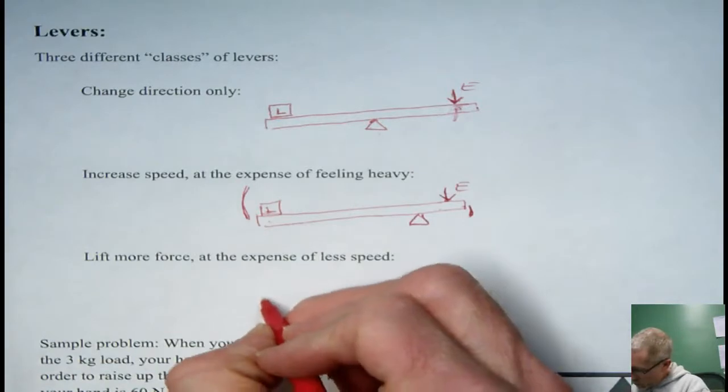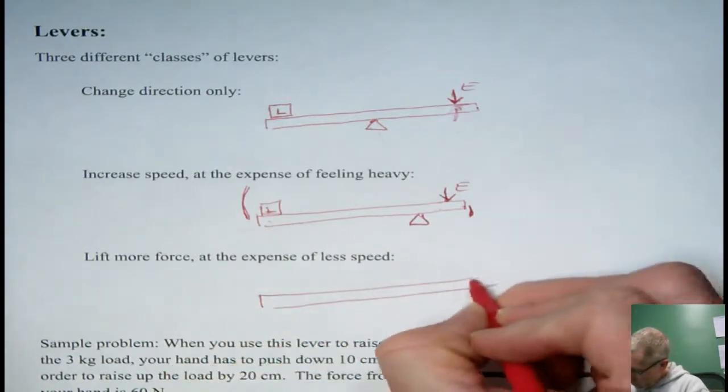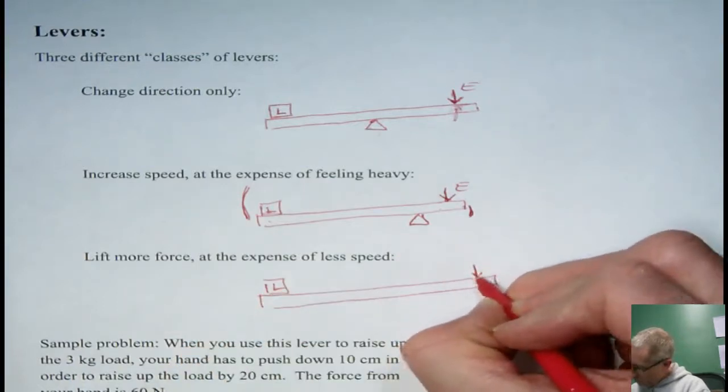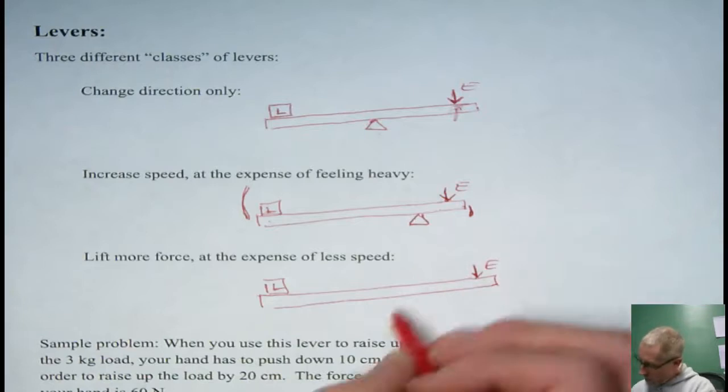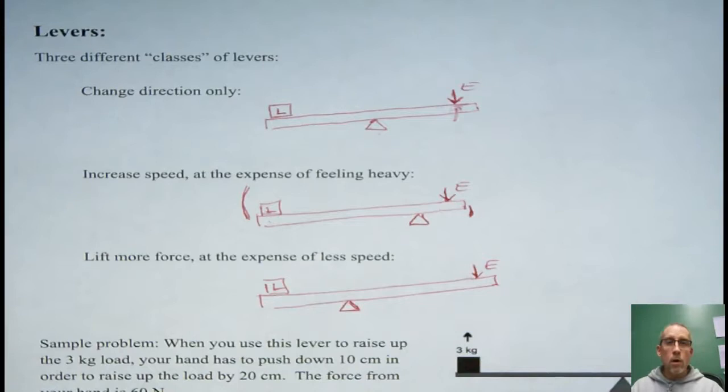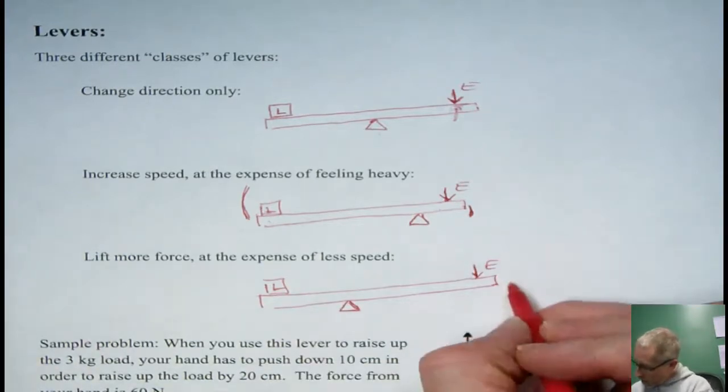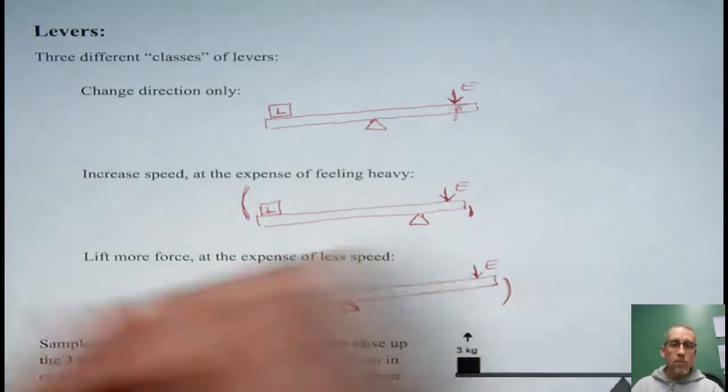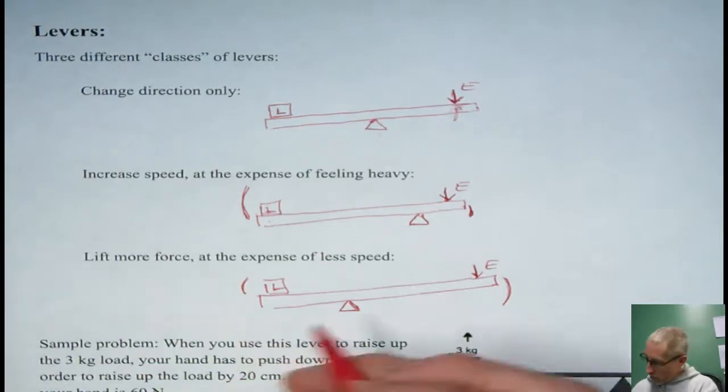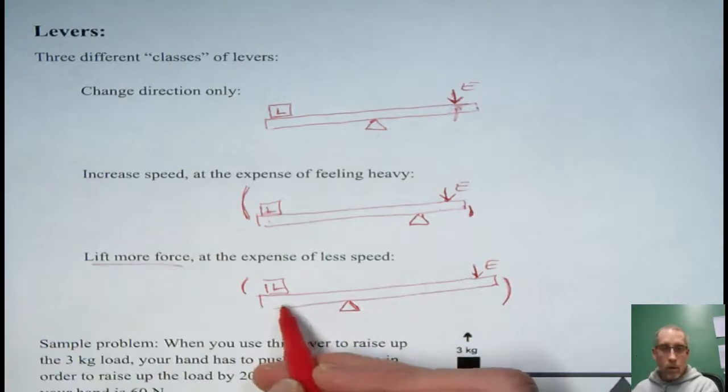Okay and the third way we can set up a lever. Again we'll put our load here at the left and our effort here on the right. But if we put the fulcrum here at the end closest to the load then just the reverse is happening. Our hand is going to have to go through much more motion than the little bit of motion that we're going to get for the load. That was the case for example when we were trying to move the rock. But we weren't trying to move the rock really fast or really far. We just wanted to move it a little bit.